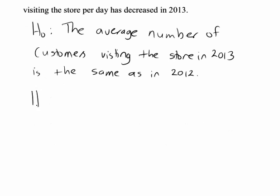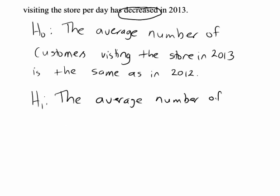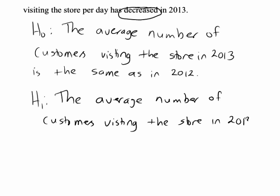The alternative hypothesis would say there has been some change. In particular, the store is interested in whether there has been a decrease. Therefore H1 would say the average number of customers visiting the store per day in 2013 is lower than in 2012.